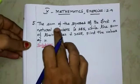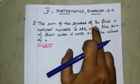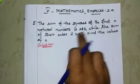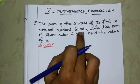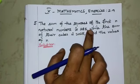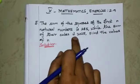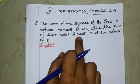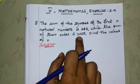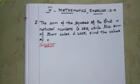The question is: the sum of the squares of first n natural numbers is 285, while the sum of the cubes is 2025. Find the value of n.